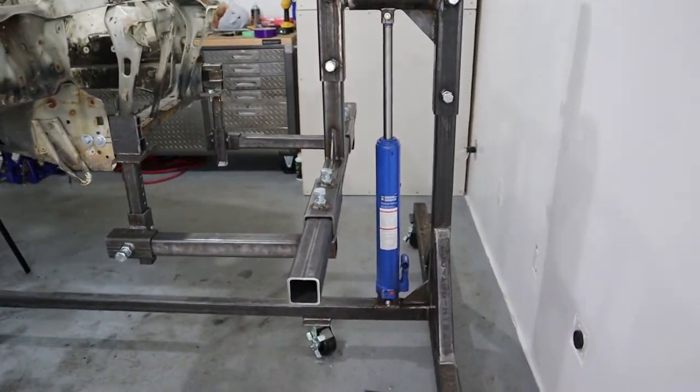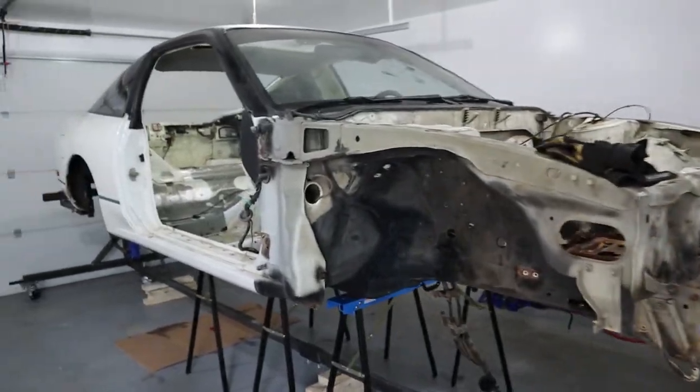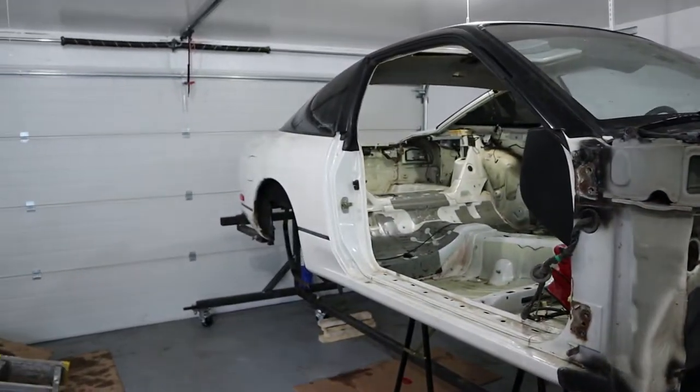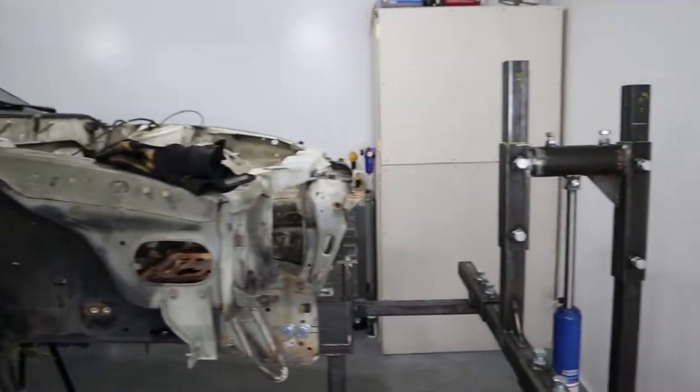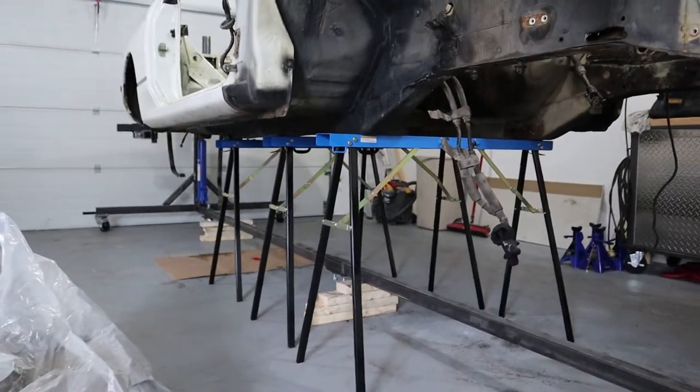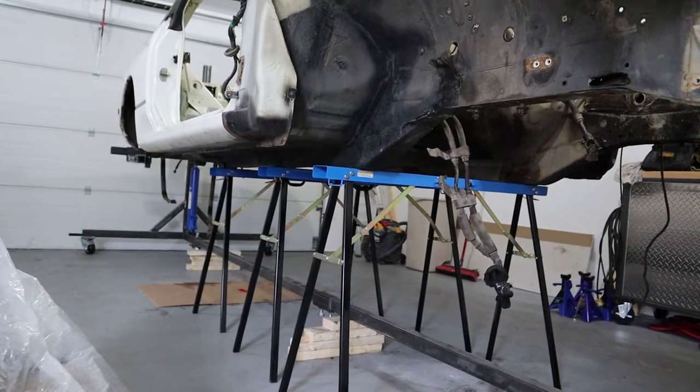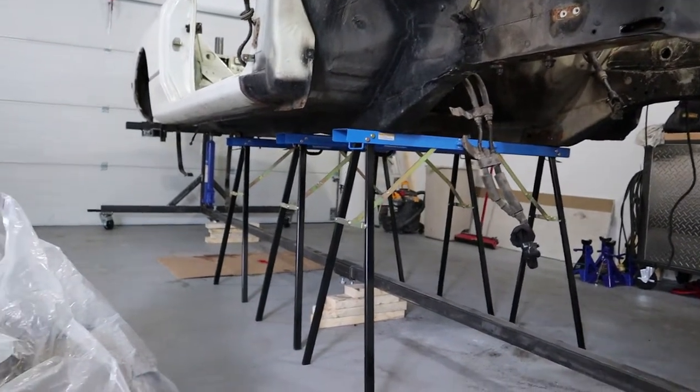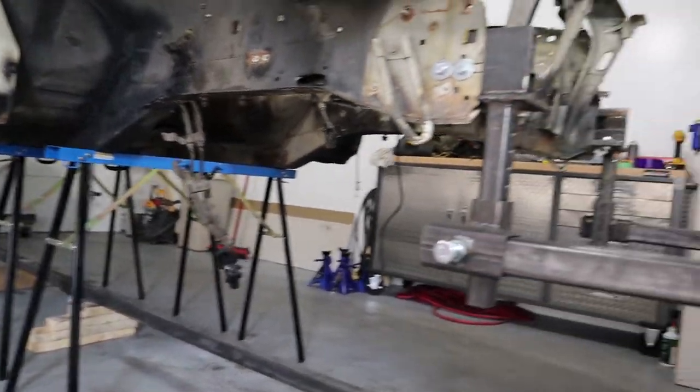Here's the 240 and it's mounted to the rotisserie front and back. I have it sitting on stands because I just don't want it sagging in the middle. It might, it might not, I don't know, but it doesn't hurt to throw the stands under here. It's actually mainly held up by the rotisserie itself.